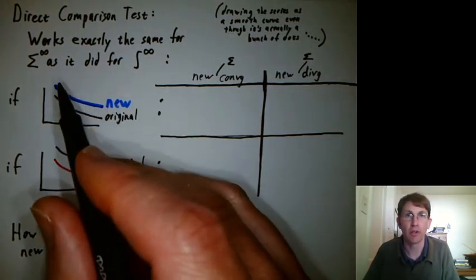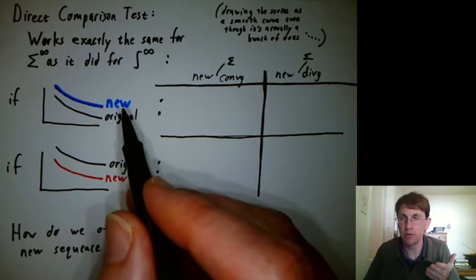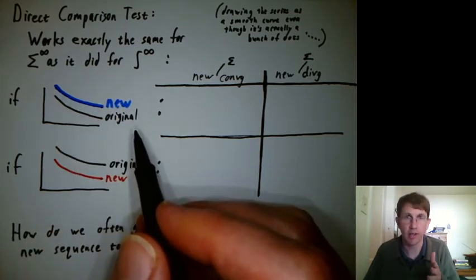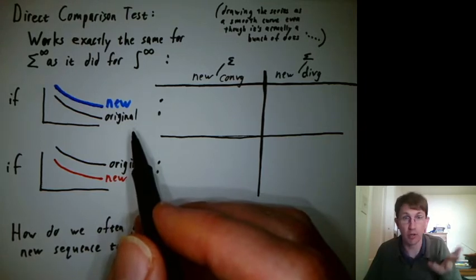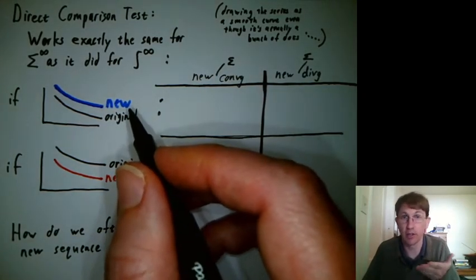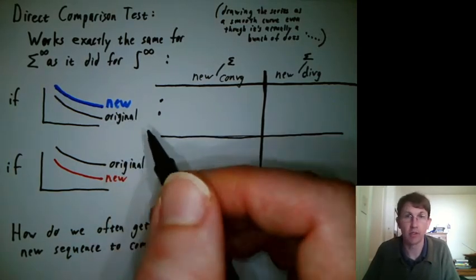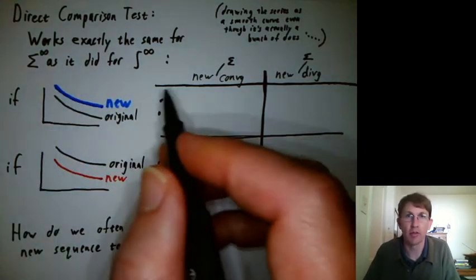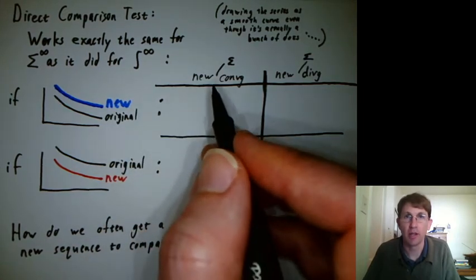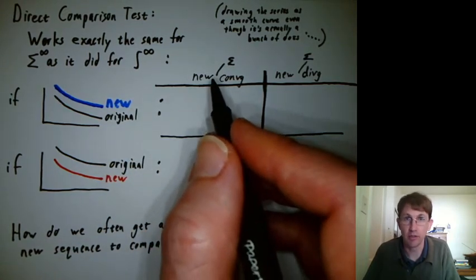So if we have some new sequence that's always bigger than the original, and we'll talk in a sec how can we get that new sequence that would always be bigger than the original, or how can we get a new sequence at all to compare the original to. So suppose we're on this row. Suppose the new sequence is bigger than the original, and suppose the new sequence converges, or the new series converges.